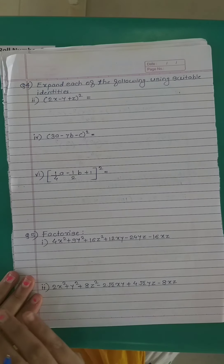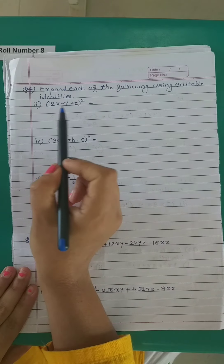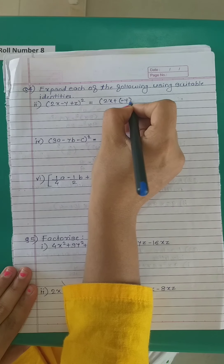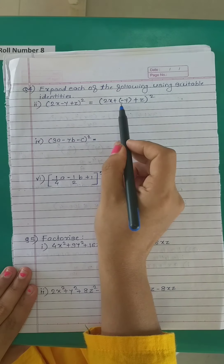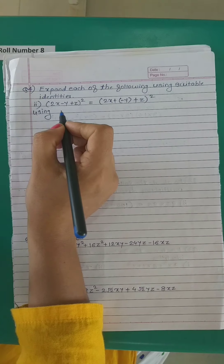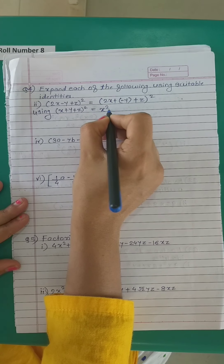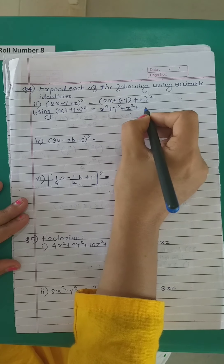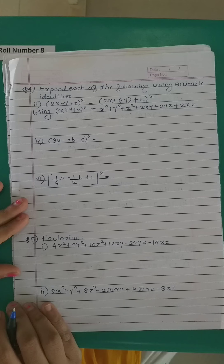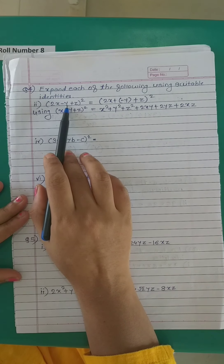Now expand each of the following using suitable identities. The first is (2x − y + z)². This is a trinomial of the form (x + y + z)². Recall the expansion: (x + y + z)² = x² + y² + z² + 2xy + 2yz + 2xz. In place of x we substitute 2x, in place of y we substitute −y, and z stays as z.